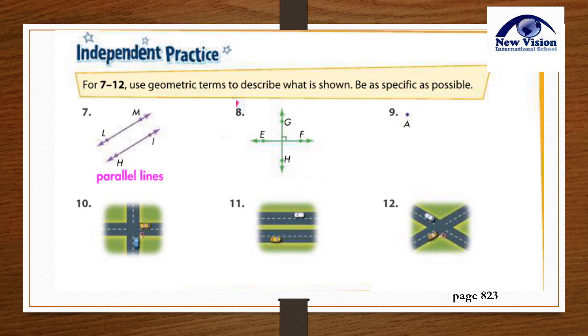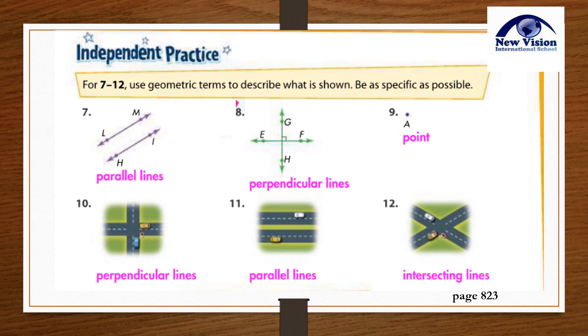Number seven: Parallel lines. Eight: Perpendicular lines. Number nine: Point. Number ten: Perpendicular lines. Number eleven: Parallel lines. And number twelve: Intersecting lines. Did you get the same answers? Great job!